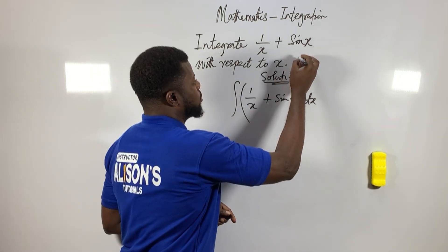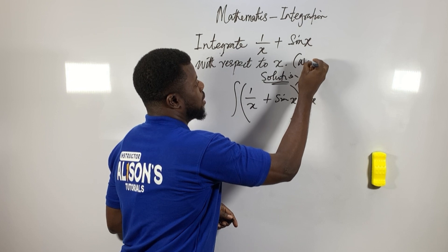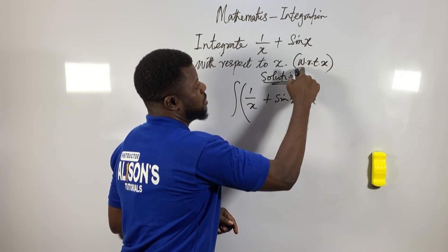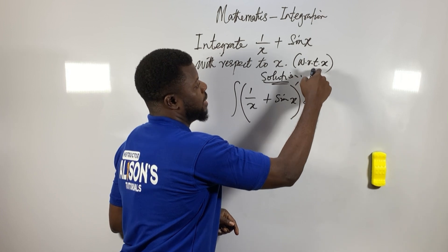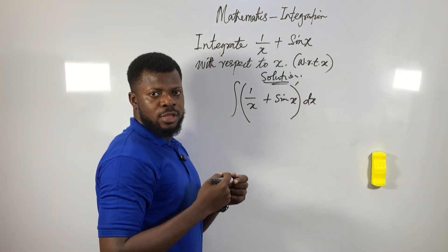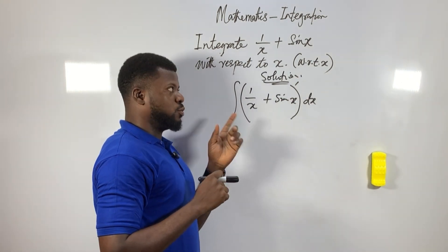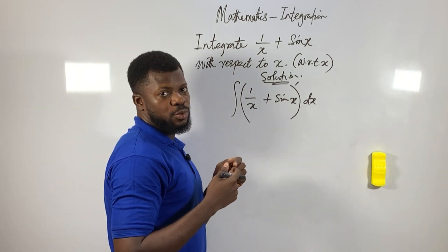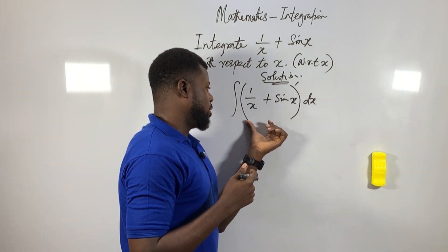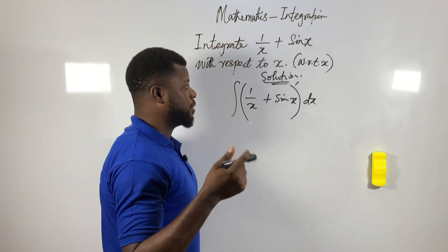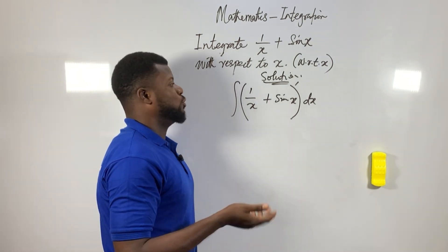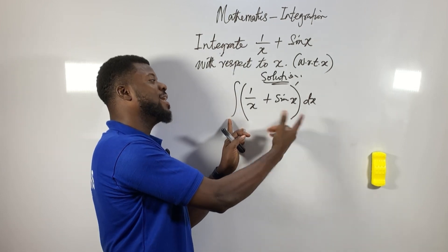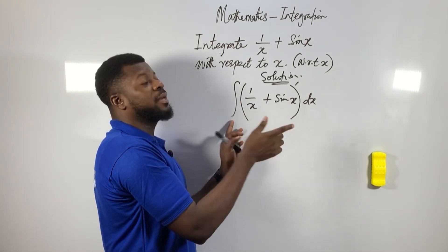Some people write 'with respect to dx' — that's not quite correct; it should be 'with respect to x.' Sometimes in textbooks you see it written as w.r.t.x — that means 'with respect to x.' Sometimes they don't get the strength to write it out fully.